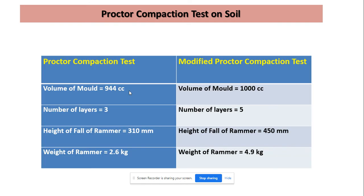Now we will discuss the difference between the Proctor compaction test and the modified Proctor compaction test. As already discussed, the procedure is the same; the difference is in the specifications. The volume of the mold is 944 cubic centimeters in the case of the standard Proctor compaction test, while it is 1000 cubic centimeters in the case of the modified Proctor compaction test.